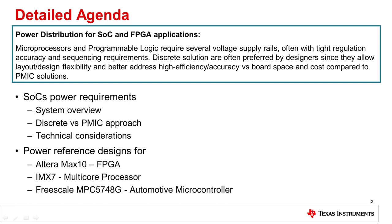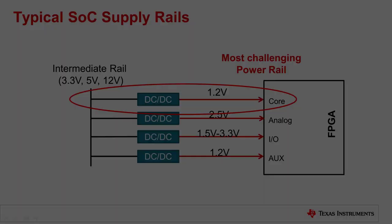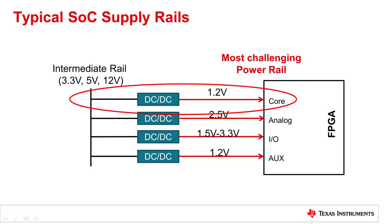After this brief introduction, we will see the features of three different power trees made for respectively the Altera MAX10, the IMX7 multicore processor, and the Freescale MPC automotive microcontroller. A typical system-on-chip configuration and its supply rails will look like in this example.